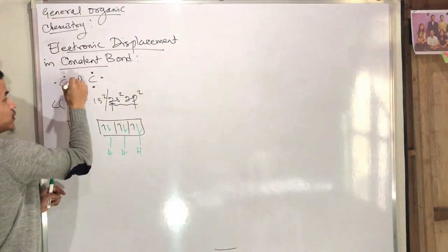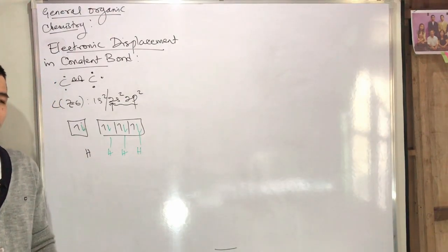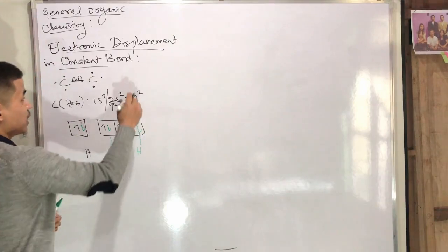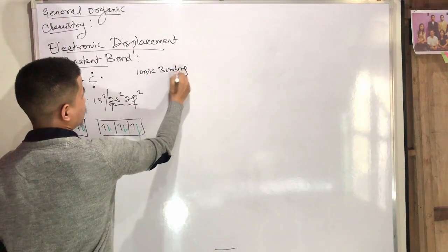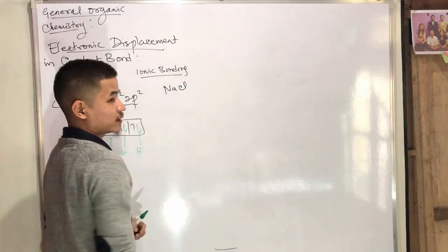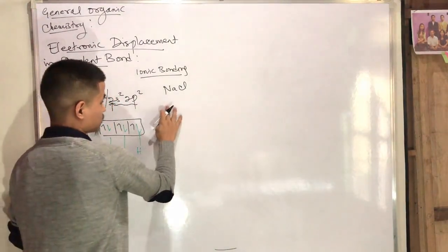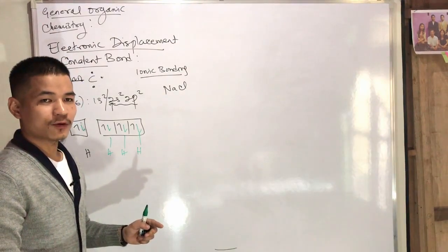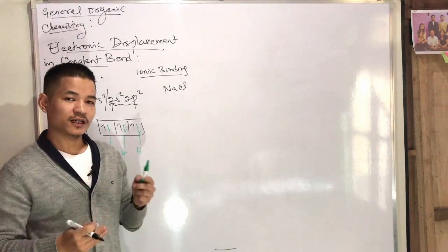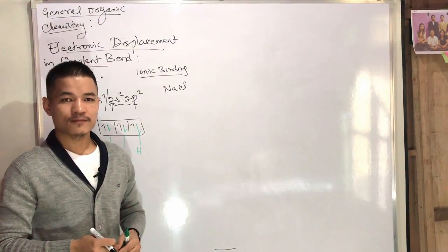This is the covalent bond. This is organic chemistry. This is bonding — this is ionic bonding. This is an example of sodium chloride. This is the transfer of electrons. This is purely ionic bonding — it is 100% ionic bonding.